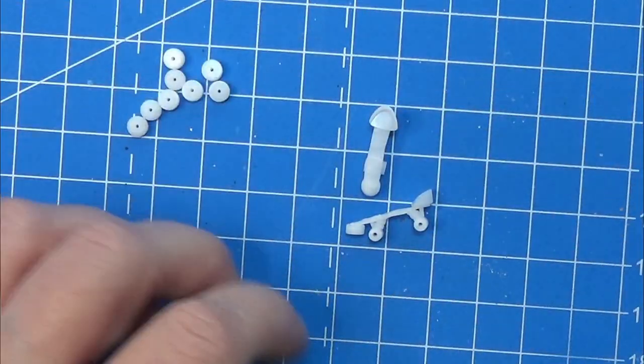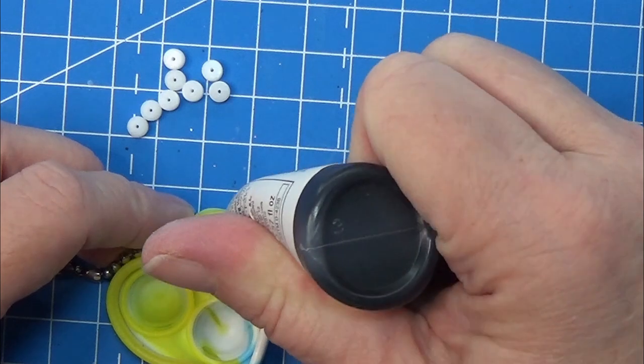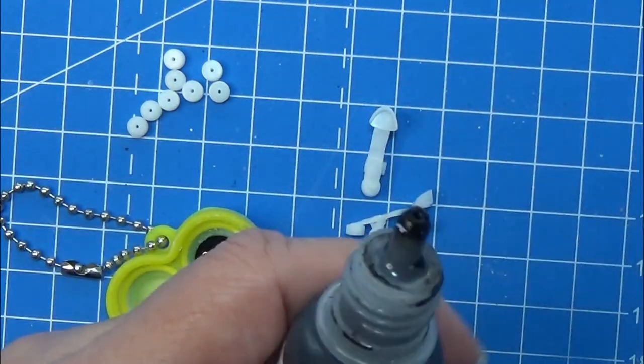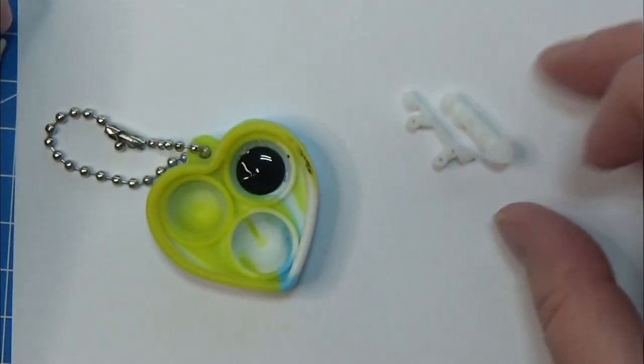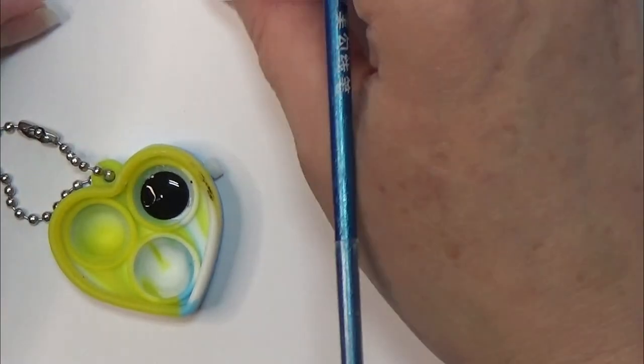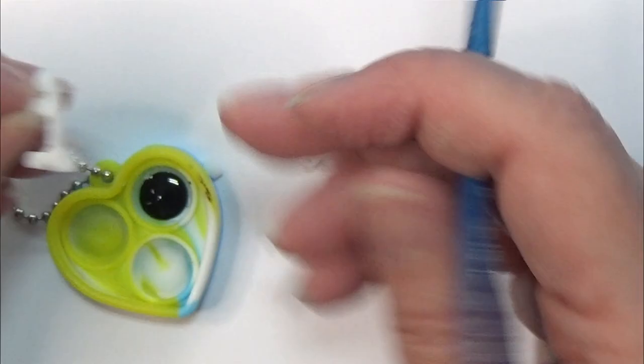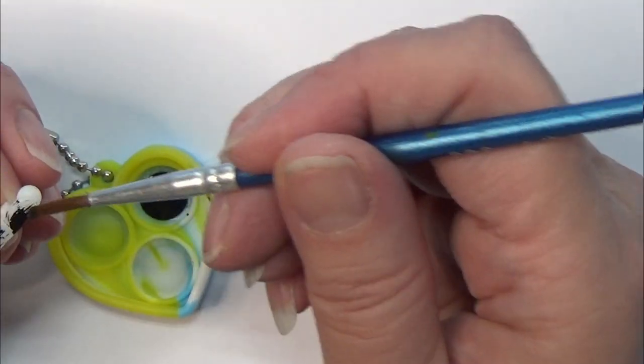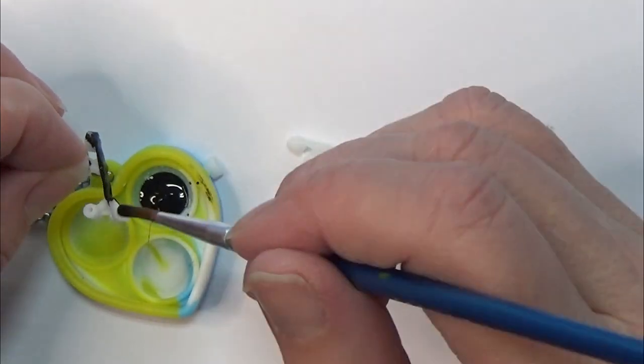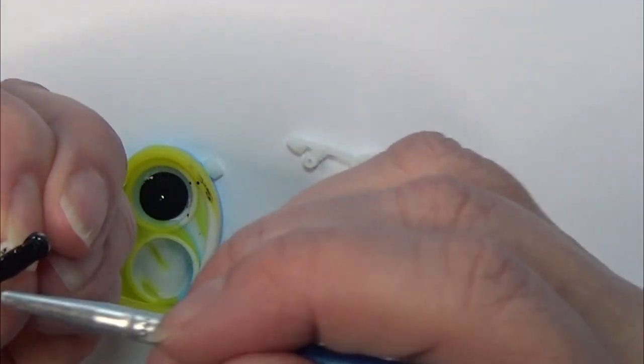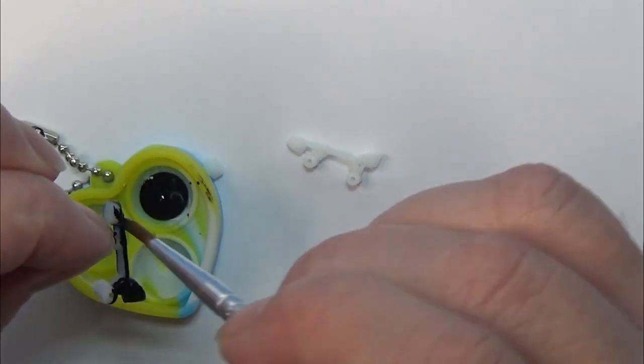Then I am using my black Vallejo paint to paint the skates themselves, the body of them. I'm doing this because I like the black showing through when I am using my silver later, which is going to make them look old without making some kind of aging on these skates.